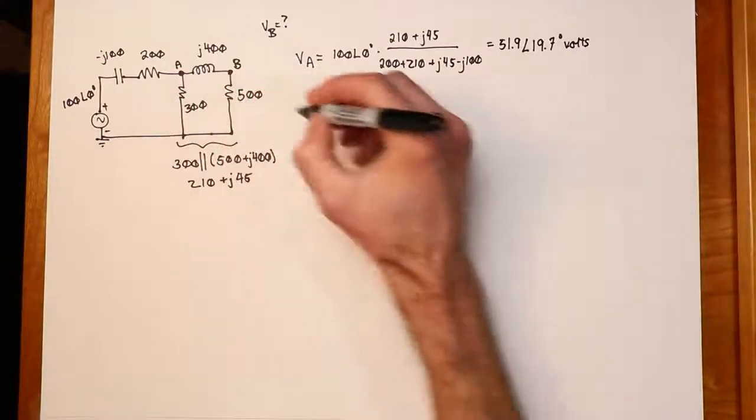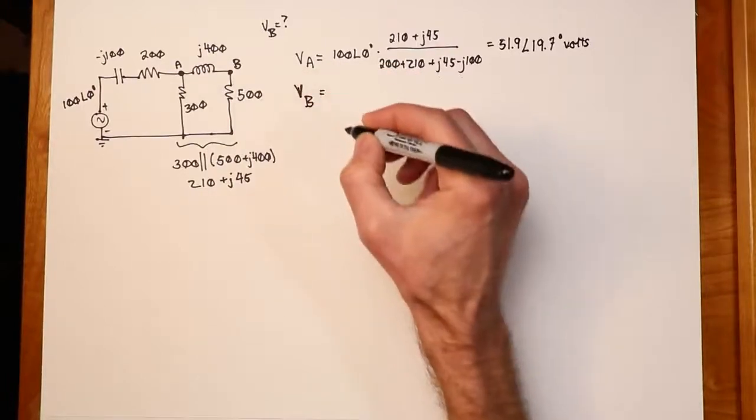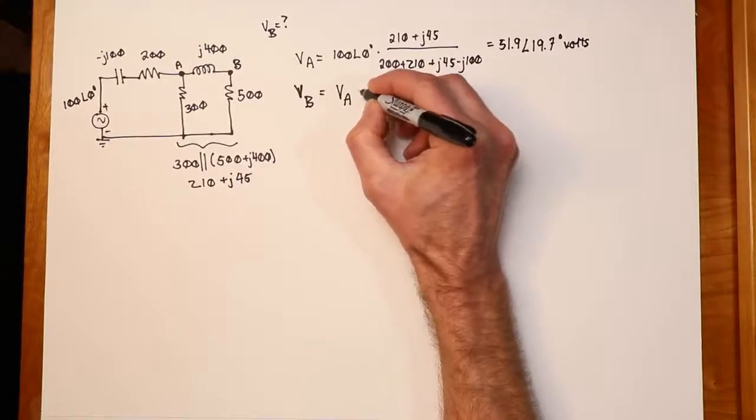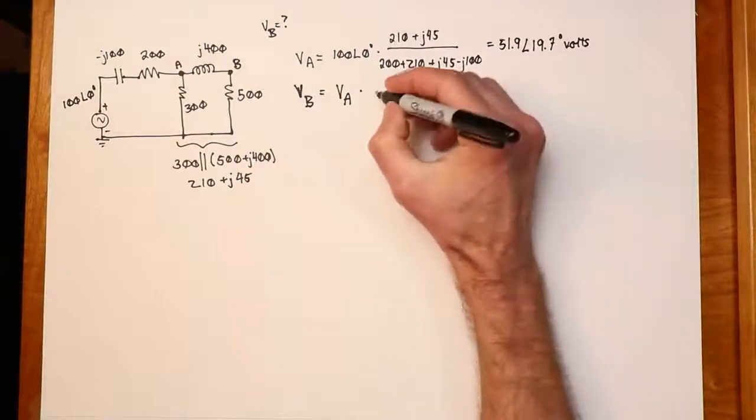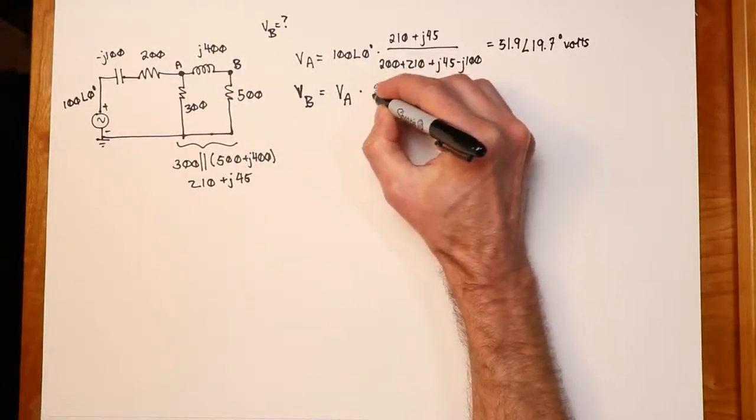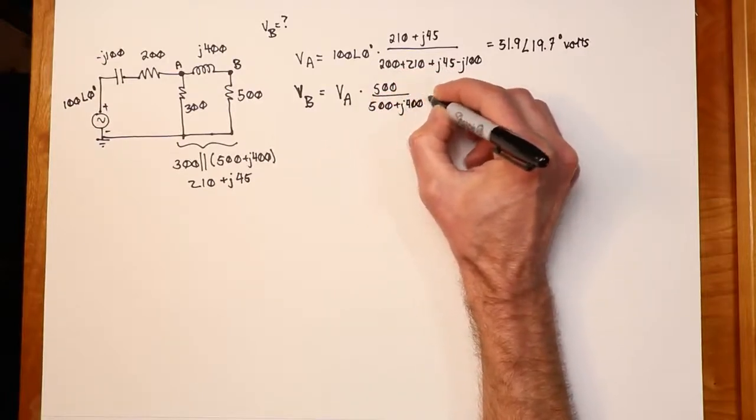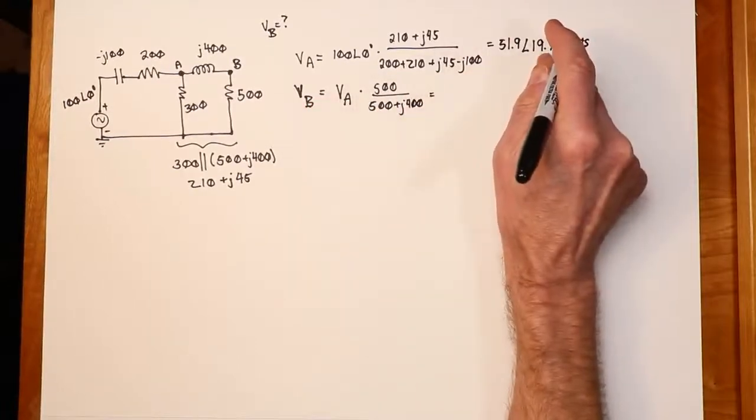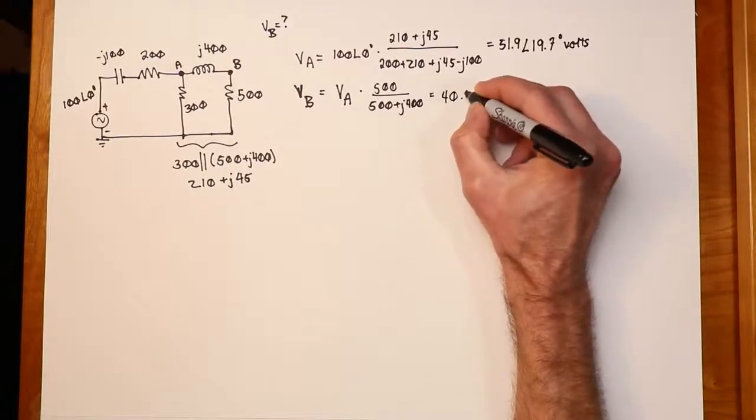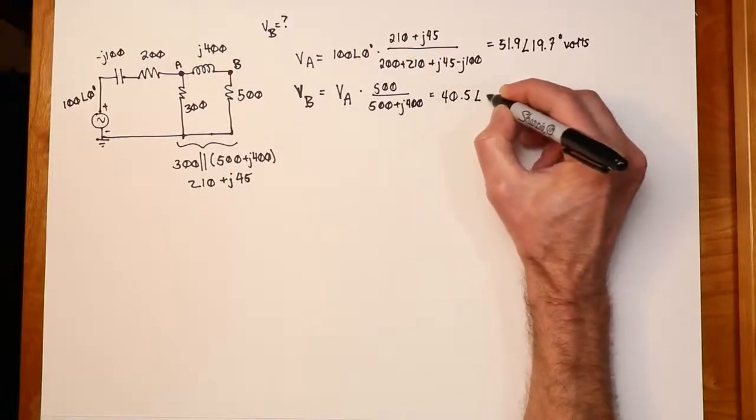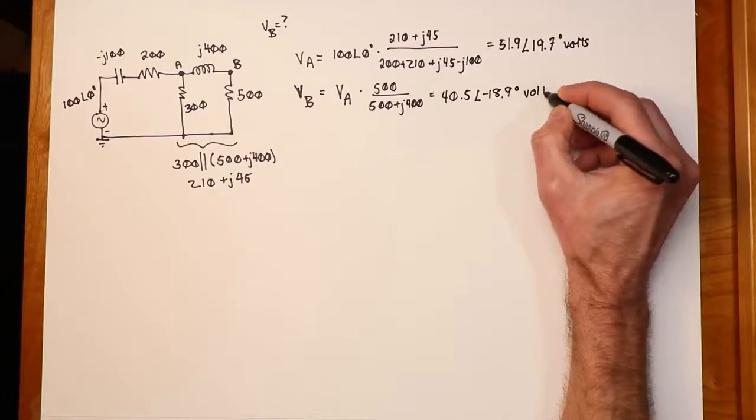Now I'll do a second voltage divider to find VB. So here we'll take VA, multiply that by the voltage divider between the resistor and inductor. In other words, 500 divided by 500 plus j400. So we plug in our VA value, and we will wind up with a VB of 40.5 at an angle of -18.9 degrees.